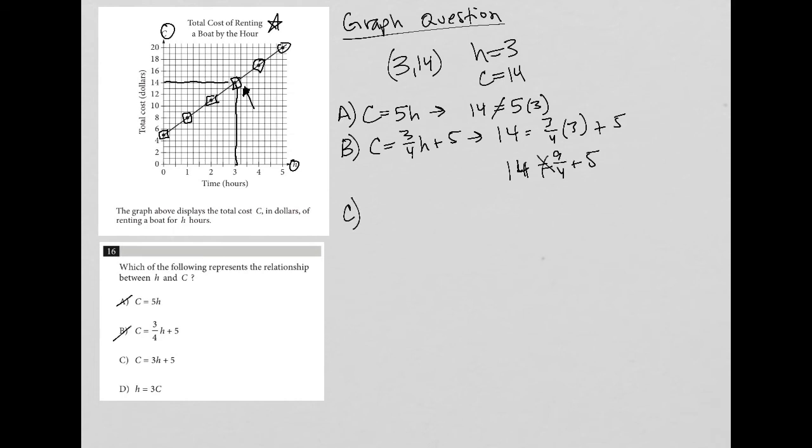And then choice C says that c equals 3h plus 5, which would mean that I'd have 14 equaling 3 times 3 plus 5, in which case this is 9 plus 5, and 14 does in fact equal 14. So there is my answer.